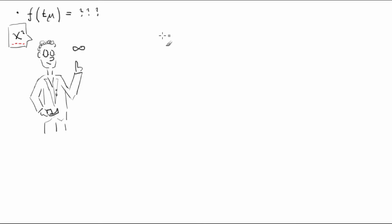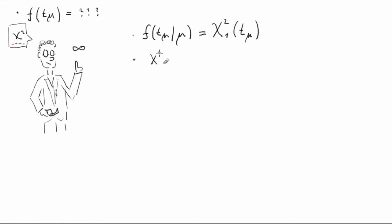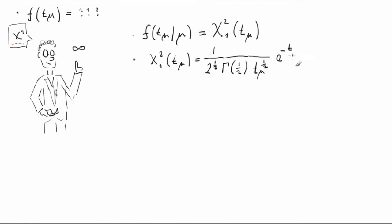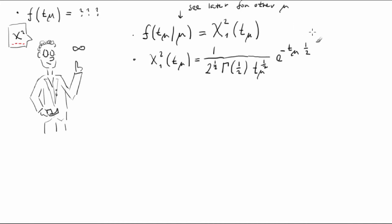Let's write the magic formula down. F of T_mu given mu is equal to the chi-square distribution with one degree of freedom of T_mu, which equals 1 over (2^(1/2) times Gamma(1/2)) times T_mu^(1/2) times e^(-T_mu times 1/2). For now, let's not worry about distributions of T_mu given other hypothesized values of signal strength — we can postpone that. Let's just enjoy the fantastic simplicity of Wilks' asymptotic formula.